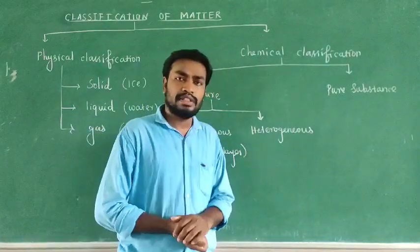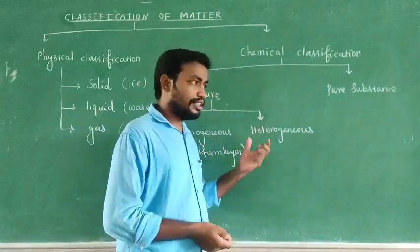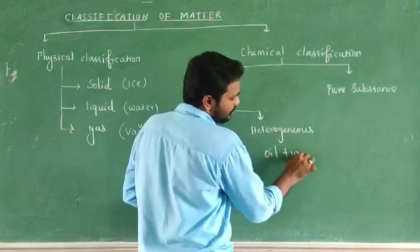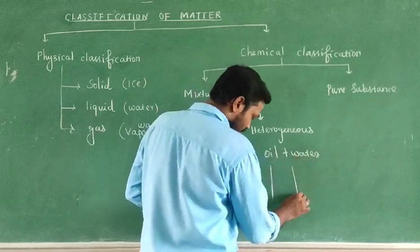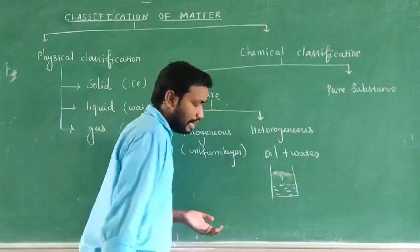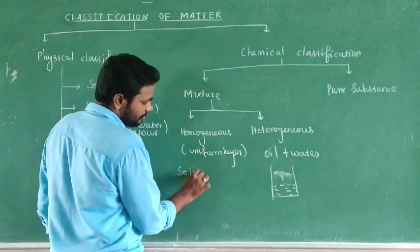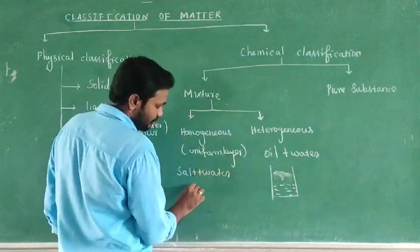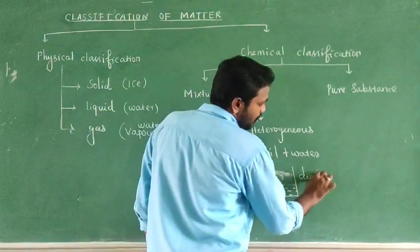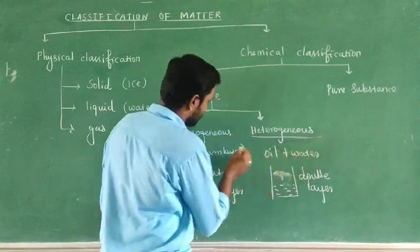Heterogeneous solution has more than two layers — three, five layers, etc. For example, oil plus water: water has higher density and settles at the bottom, oil has lower density and floats on top. Salt water is a single layer, making it homogeneous. Oil and water is a double layer, making it heterogeneous.